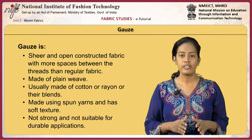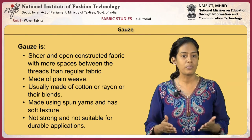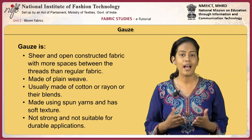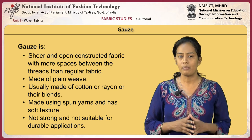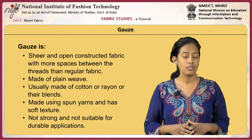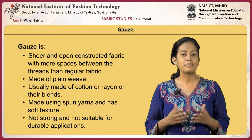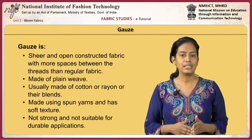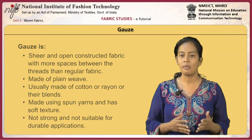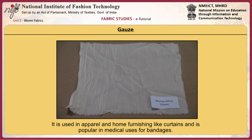Gauze is a sheer and open constructed fabric with more spaces between the threads than regular fabric. It is made of plain weave, usually from cotton, rayon or other blends, using spun yarns, giving it a soft texture. Gauze is not strong, hence not suitable for durable applications. It is used in apparel, home furnishing like curtains, and is popular in medical uses for bandages. Indian gauze has a crinkled look with varied thickness.